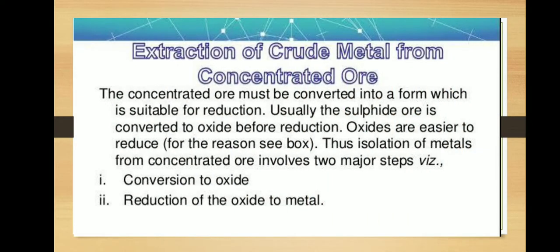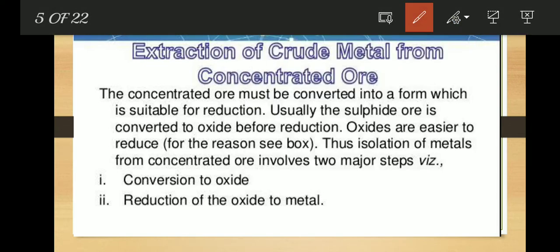Next topic: extraction of crude metal from concentrated ore. The concentrated ore must be converted into a form suitable for reduction. Usually, the sulfide ore is converted to oxide before reduction, since oxides are easier to reduce. Thus, isolation of metals from concentrated ore involves two major steps: first, conversion to oxide; and second, reduction of the oxide to metal.